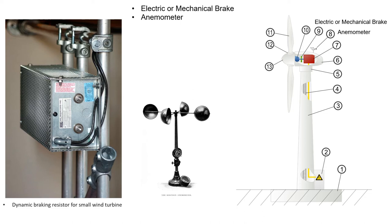The next component is the anemometer. An anemometer is a device used for measuring wind speed and direction. It is also a common weather station instrument. Here in the picture is shown a small anemometer. The anemometer is installed at the top of the nacelle.